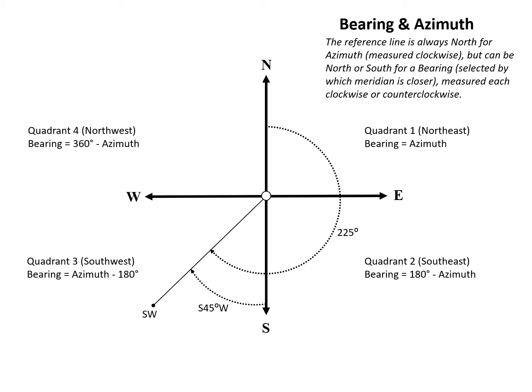In quadrant four, which is the northwest quadrant, the bearing is equal to 360 degrees minus the azimuth.